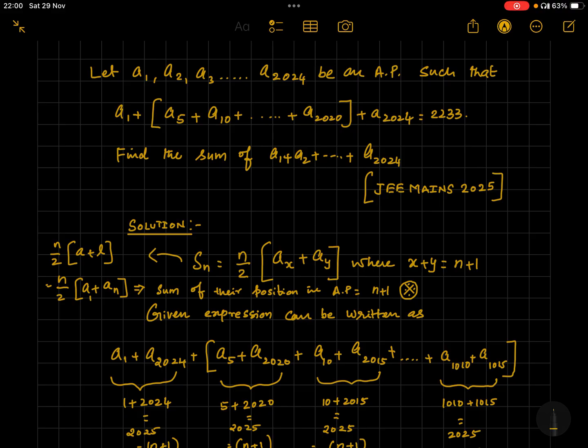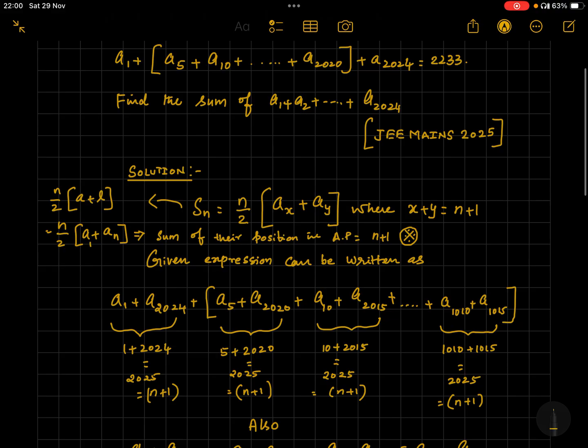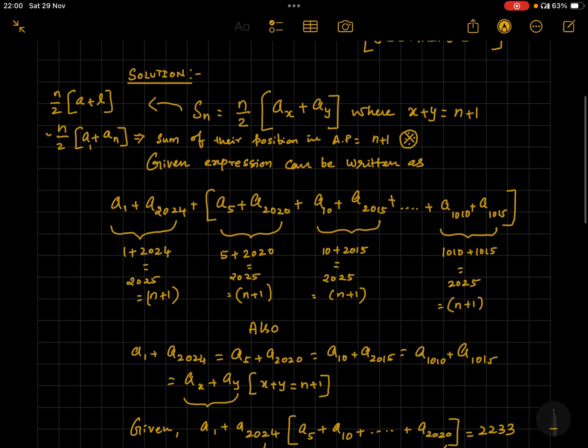So in this problem, for example, I will say a1 plus a2024 - obviously they are the first and last terms, so they are equidistant. You can see a1's position is number one and a2024's position is the last, that is 2024. Therefore, 1 plus 2024 equals 2025, which is equal to n plus 1.